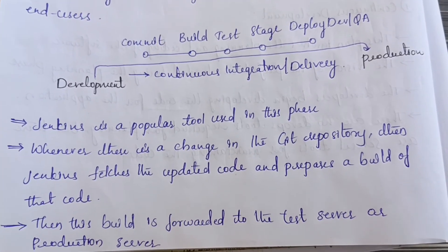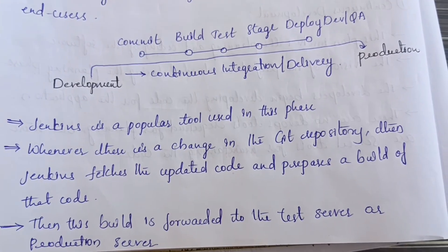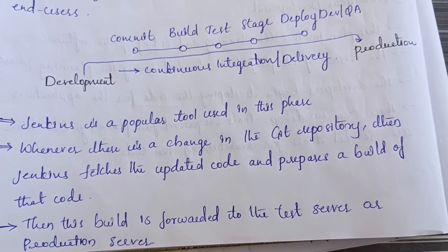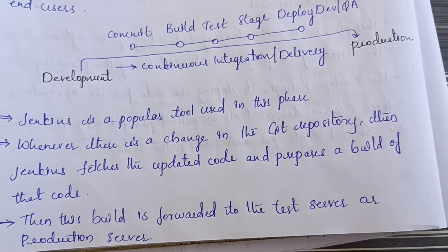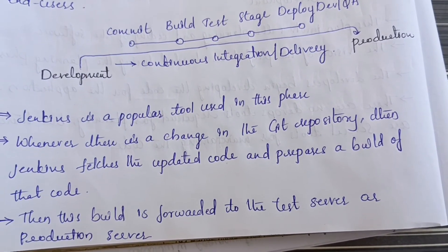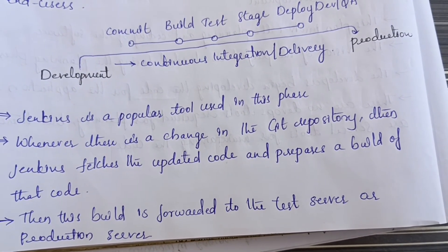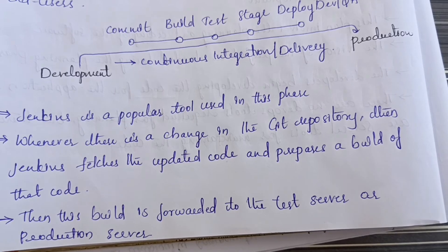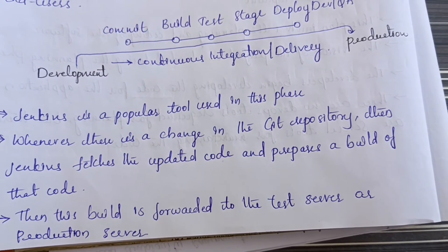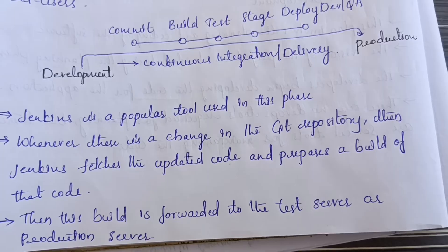In continuous integration, Jenkins is used as a popular tool. Whenever there is a change in the Git repository, Jenkins fetches the updated code and prepares a build of that code. This build is then forwarded to the test server or production server.